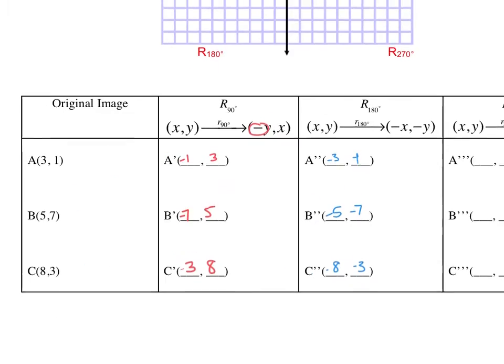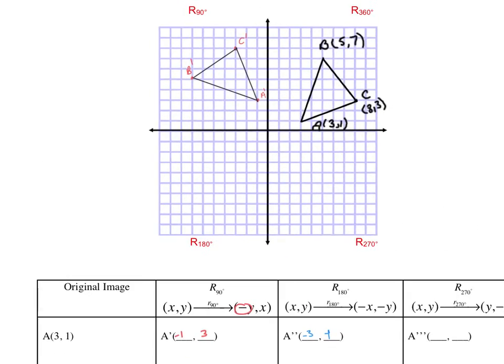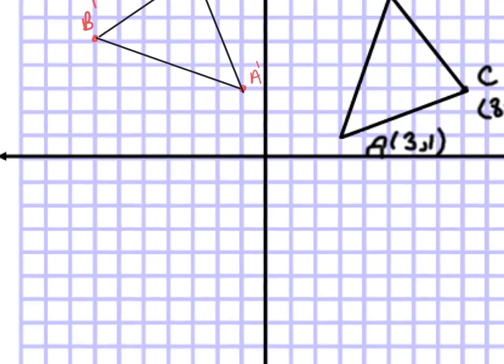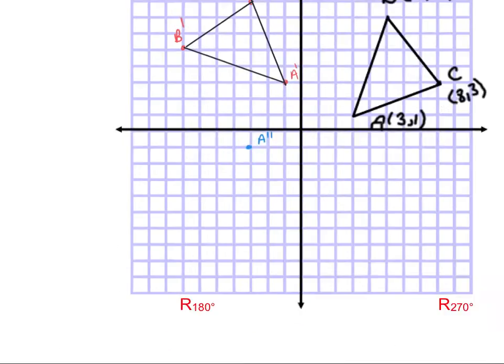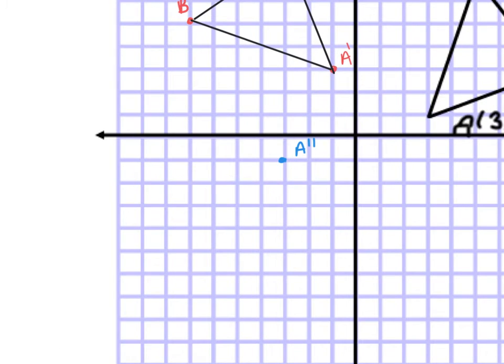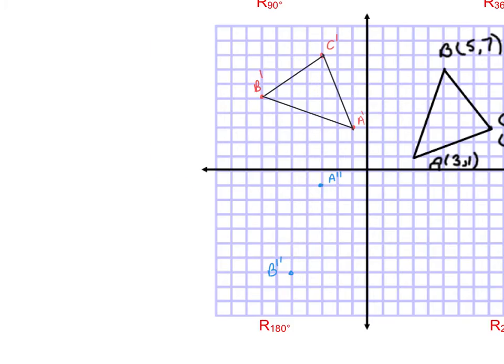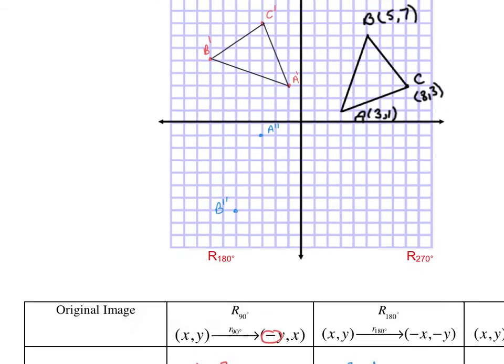Now I'm going to plot those points. I'm going to plot (-3,-1). And that's a double prime. So 1, 2, 3, 1. Negative 5, negative 7 is B double prime. So 4, 5, 1, 2, 3, 4, 7. B double prime. And then C double prime of (-8,-3).